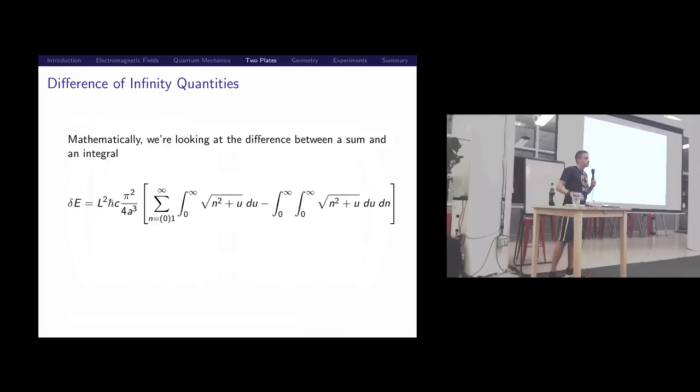Casimir says, let's subtract the energy difference on the inside and the outside, and we should be able to get some pressure from the energy. Well, this is a common question you all asked as children. What's infinity minus infinity? There are different kinds of infinity. This one's continuous. On the inside, you've got discrete bands.